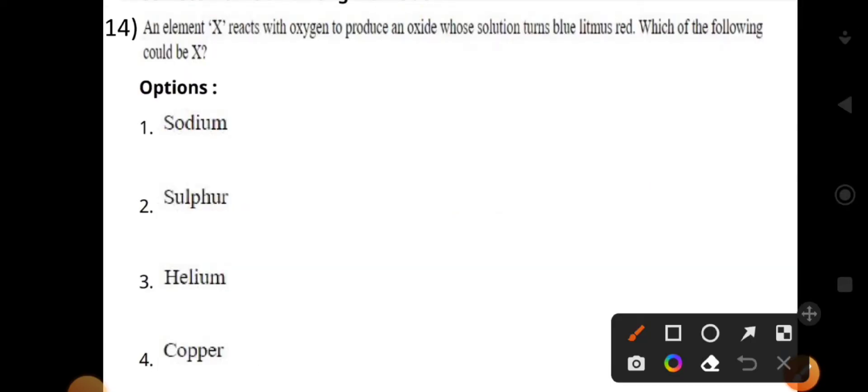An element X reacts with oxygen to produce an oxide whose solution turns blue litmus red. Which of the following could be X? The correct answer is sulfur. X should be sulfur.